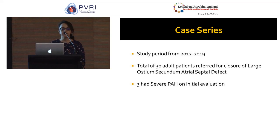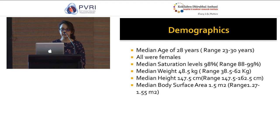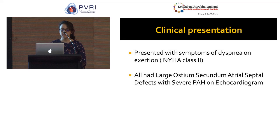Out of those 30 patients, three of them had severe PH on initial evaluation. The median age was 28 years, ranging from 23 to 30 years. Interestingly, all of them were females. Median saturations ranged from 88 to 99 percent, weight from 38 to 62 kilos, height from 147 to 162 cm, and body surface area ranging from 1.27 to 1.55 meters square.